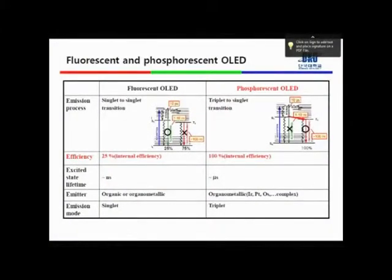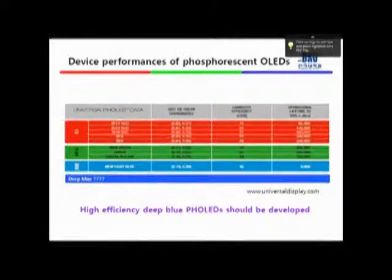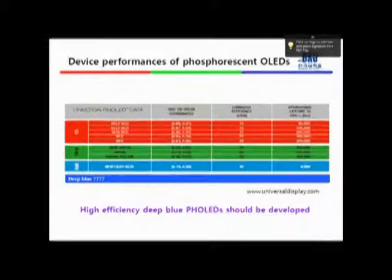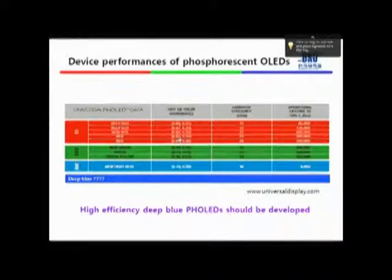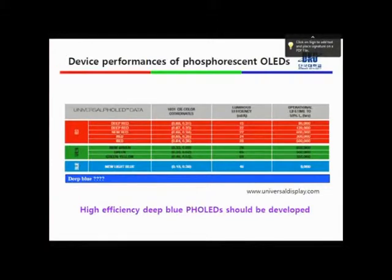I will not go into detail about this, but phosphorescent OLED systems usually show four times higher quantum efficiency than fluorescent devices — that was our motivation. However, if we check the device performances of, for example, UDC — Universal Display Corporation — they have excellent data in red, green, and sky-blue, but we cannot find any deep-blue data on their website. So we have to develop a high-efficiency deep-blue phosphorescent device.